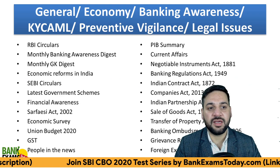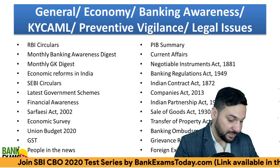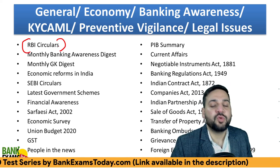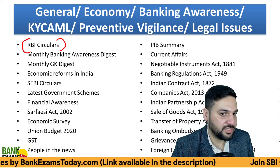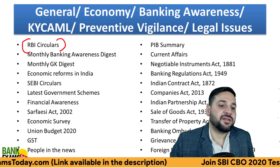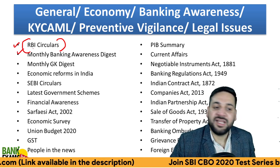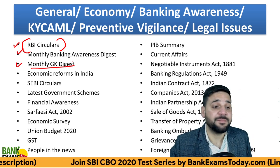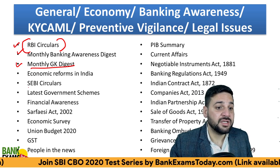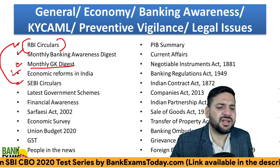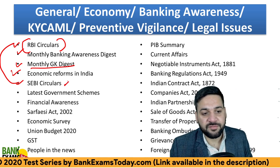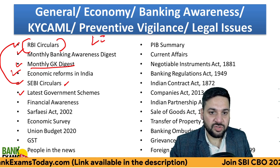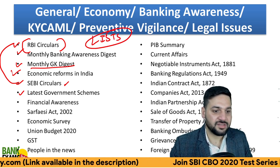One-fourth negative marking is there for general economy. The most important part is the RBI circular — it is the most important topic. The banking awareness digest is also important. I recommend you go through the monthly GK digest. Economic reforms and SEBI circulars — there are hardly six pages of content for SEBI circulars, so go through that. For government schemes, we have prepared a proper list, so go through the GK list.